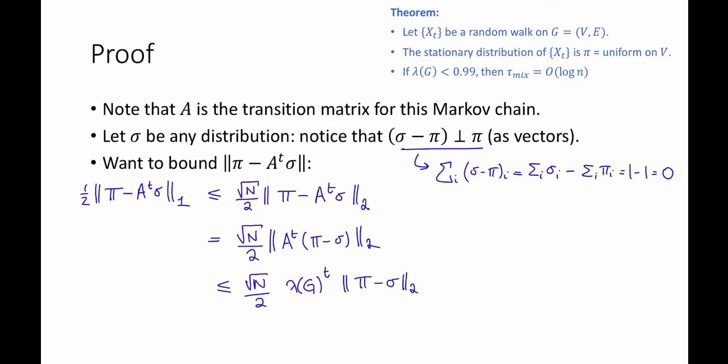The L2 norm of pi minus sigma is at most the L1 norm of pi minus sigma. And the L1 norm of pi minus sigma is at most 1, because by the triangle inequality it's at most the L1 norm of pi, which is 1, plus the L1 norm of sigma, which is 1.